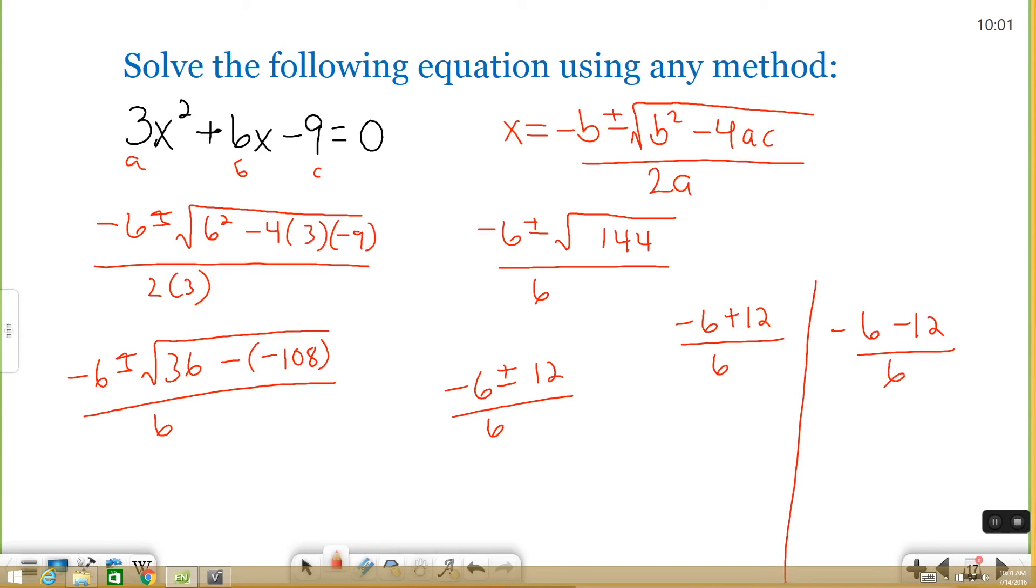You have one's plus, one's minus. Negative 6 plus 12 is 6 and 6 divided by 6 is 1. There's one answer. Negative 6 minus 12 is negative 18 and negative 18 divided by 6 is negative 3.